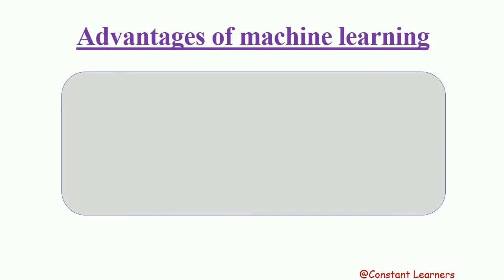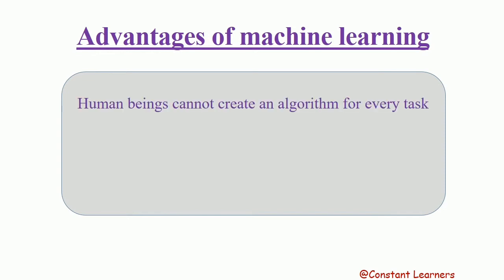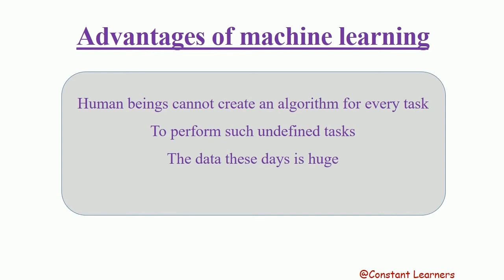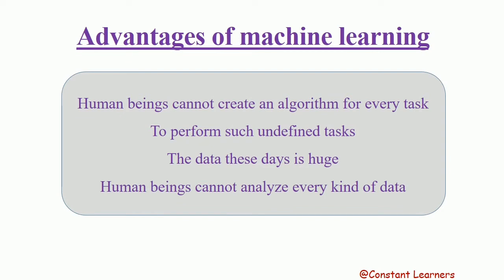But why is this so important? Human beings cannot create an algorithm for every task. For example, we recognize people we've met ages ago, but we cannot create an algorithm to explain this face recognition — it just happens with experience. To perform such undefined tasks, machines need to be intelligent like humans. Also, the data these days is huge and human beings cannot analyze every kind of data, so we need machine learning so that the task gets done easily and quickly.